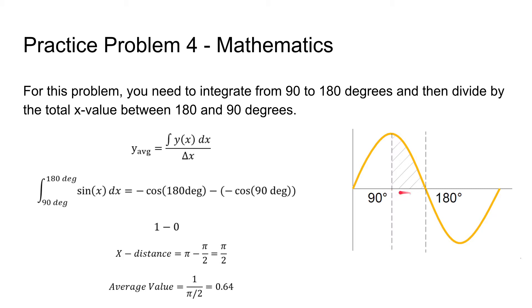Then we need to find the distance of 180 to 90, and for this one, we're converting 180 and 90 degrees to radians. So 180 is going to be equal to pi, 90 is pi over 2. So the distance between those two values, change in x, is going to be pi over 2. So we take our sum and divide it by pi over 2, and we get a value of 0.64.